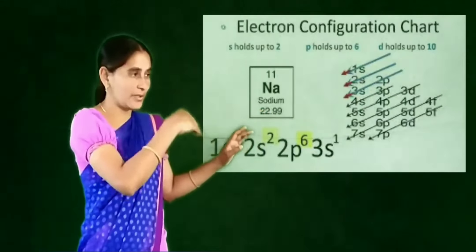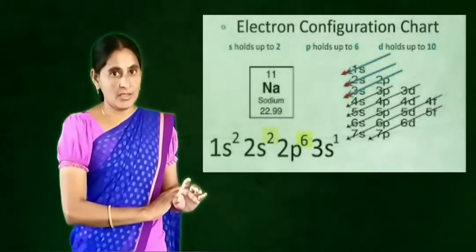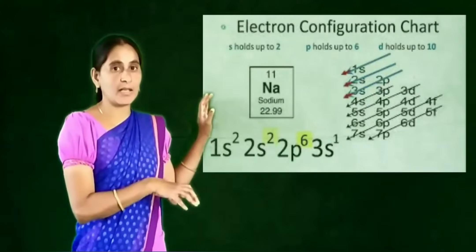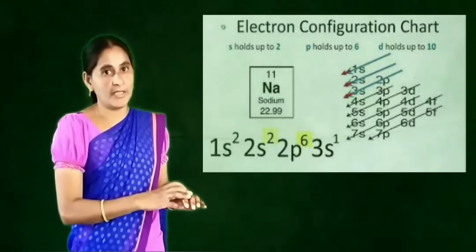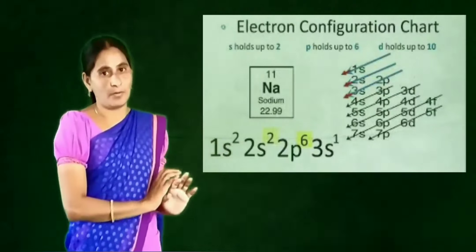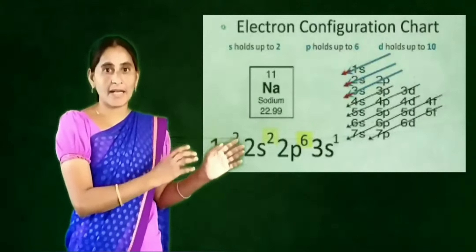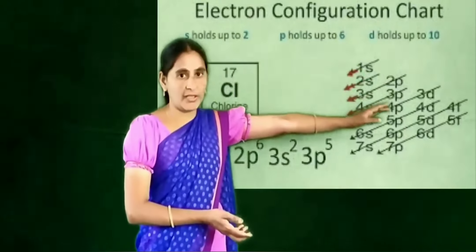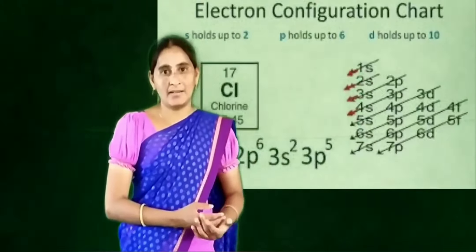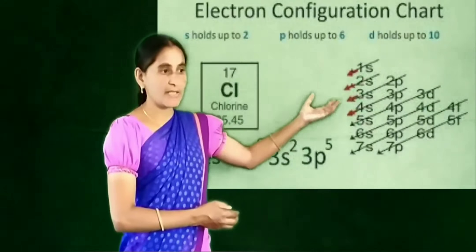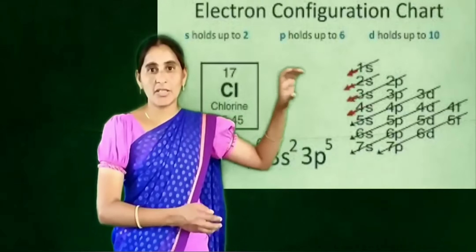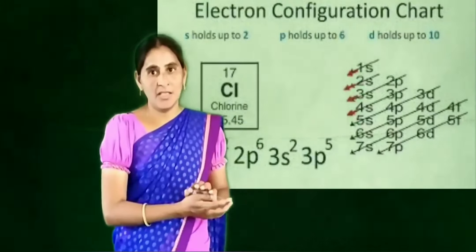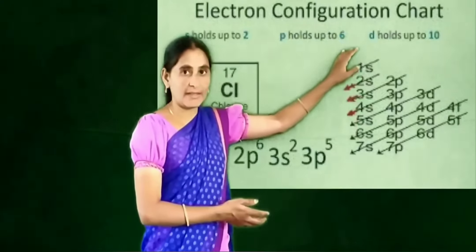Sodium is ready to give that electron to any other element. The losing of electron property is known as metallic property. As a result, a cation will form by losing of electron. Next, chlorine forms the anion because chlorine has atomic number 17 and its configuration is 1s2, 2s2, 2p6, 3s2, 3p5.